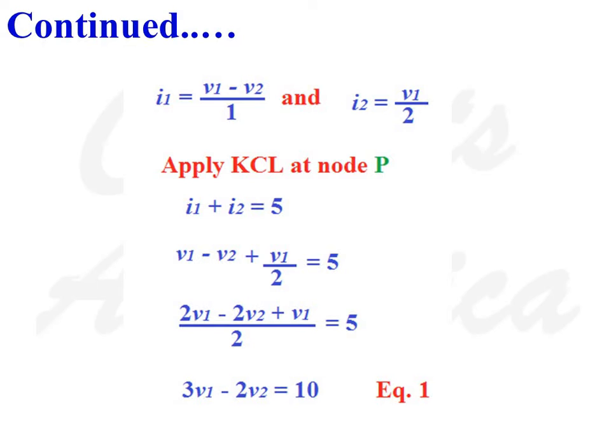Applying KCL at node P: I1 plus I2 is equal to 5. That is, (V1 minus V2) divided by 1, plus V1 divided by 2, is equal to 5. Rearranging the terms, we get 3V1 minus 2V2 is equal to 10. This is Equation number 1.